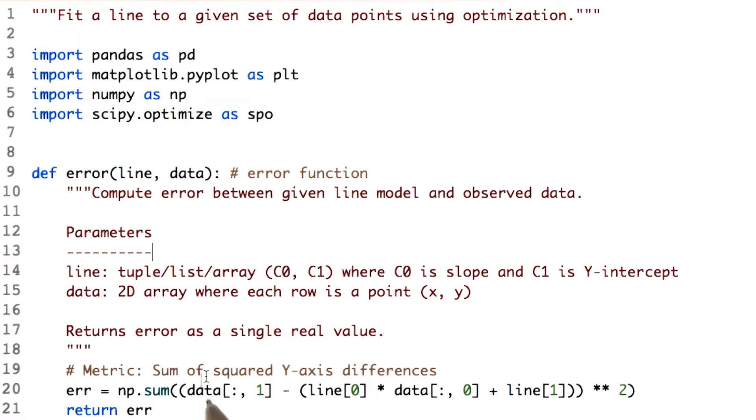We have the value of the actual data at each point here, minus the estimate that the line we're currently looking at would give at that same point. So we use the zero coefficient and the one coefficient times the x value of the data at that point.